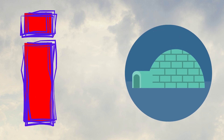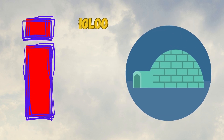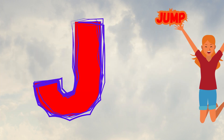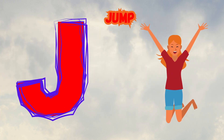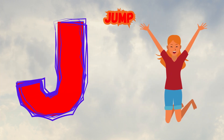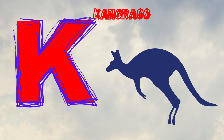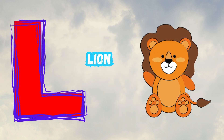I is for Igloo. I-I-Igloo. J is for Jump. J-J-Jump. K is for Kangaroo. K-K-Kangaroo. L is for Lion. L-L-Lion.